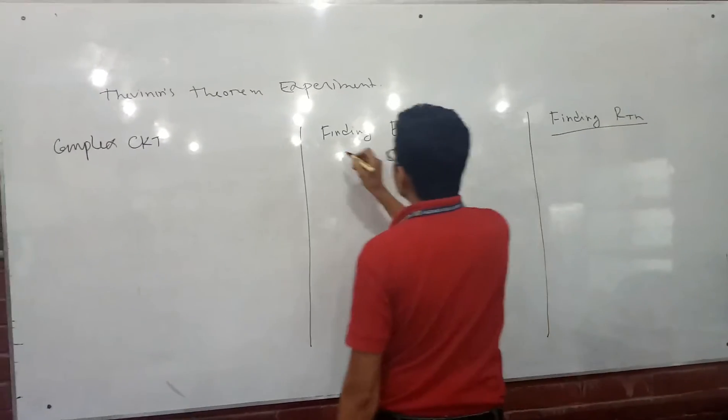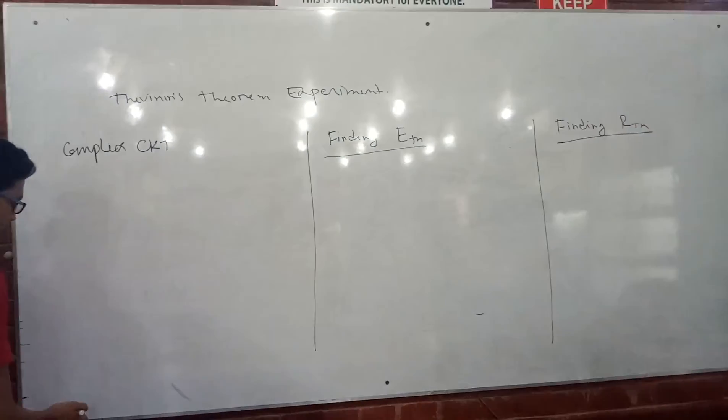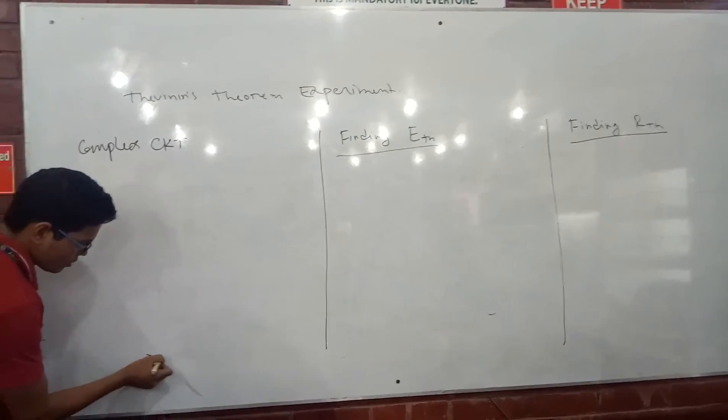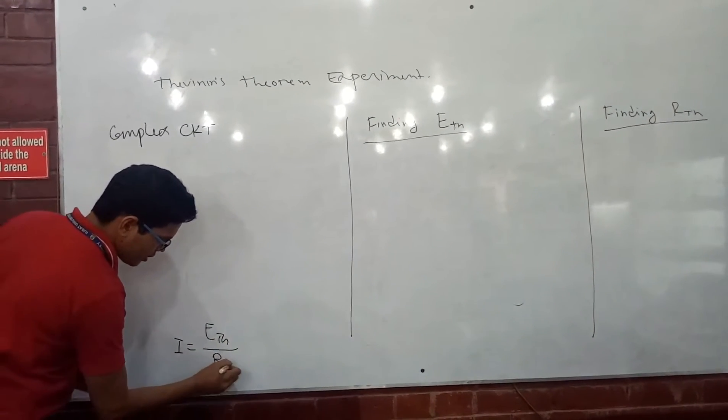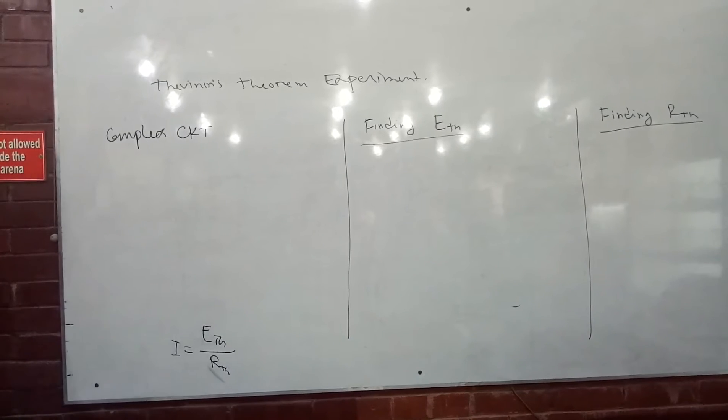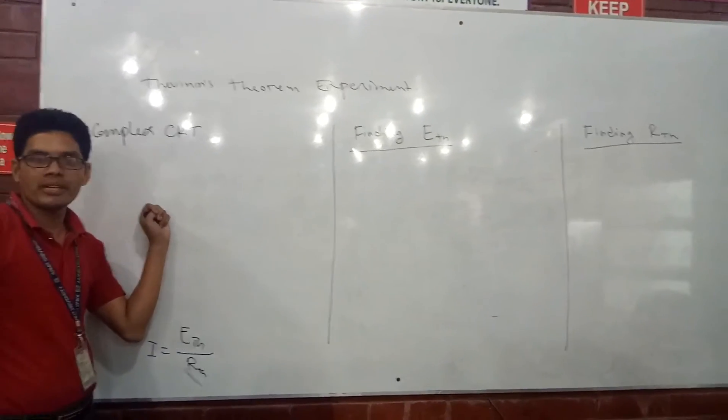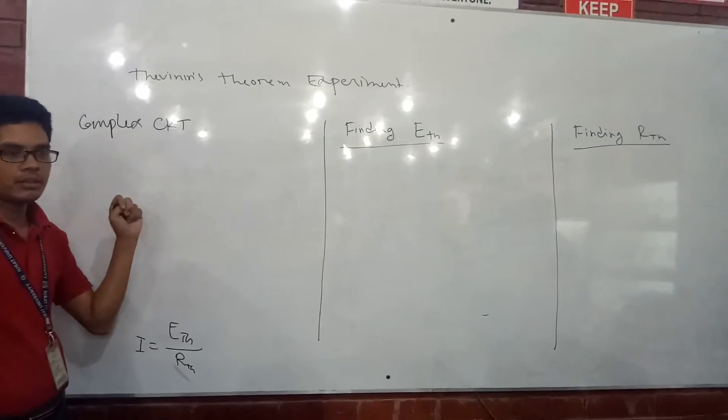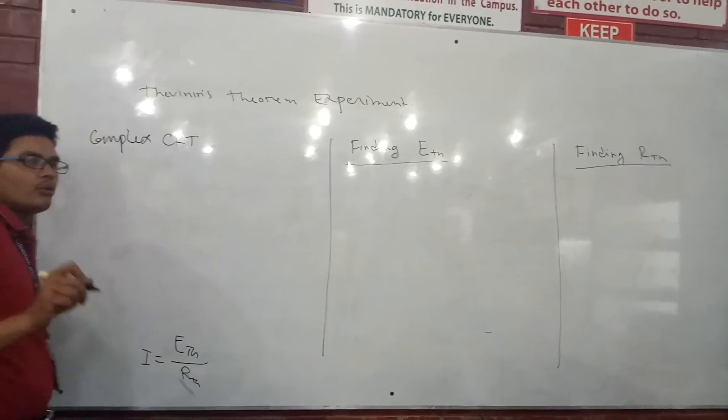RTS (Thevenin's equivalent resistance), and then finally find out the current: I equals ETS over RTS. Now, select a complex circuit - that's the first job. We have done superposition theorem, right? That was a complex circuit.